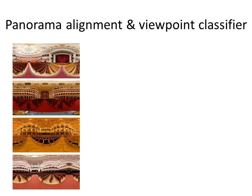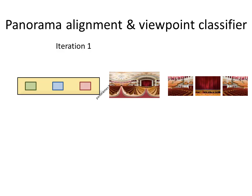The input for the second step is a list of unaligned panoramic images from a single place category. We want to align them and train the viewpoint classifier. For the first iteration of the algorithm, we use only one panorama for training. Because there is only one panorama, there is no need for alignment. We train a viewpoint classifier using one training example from each view.